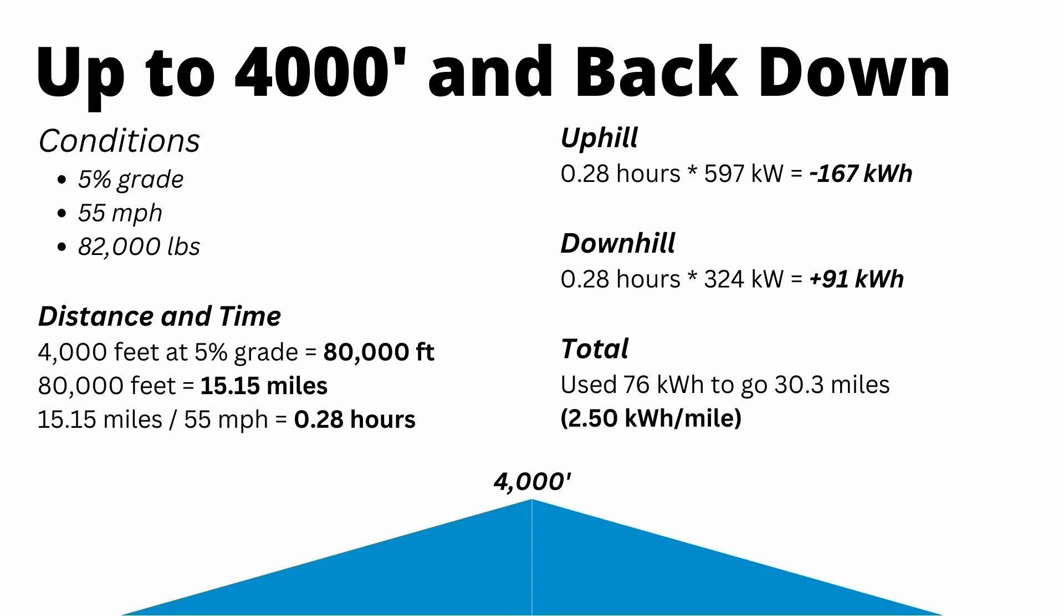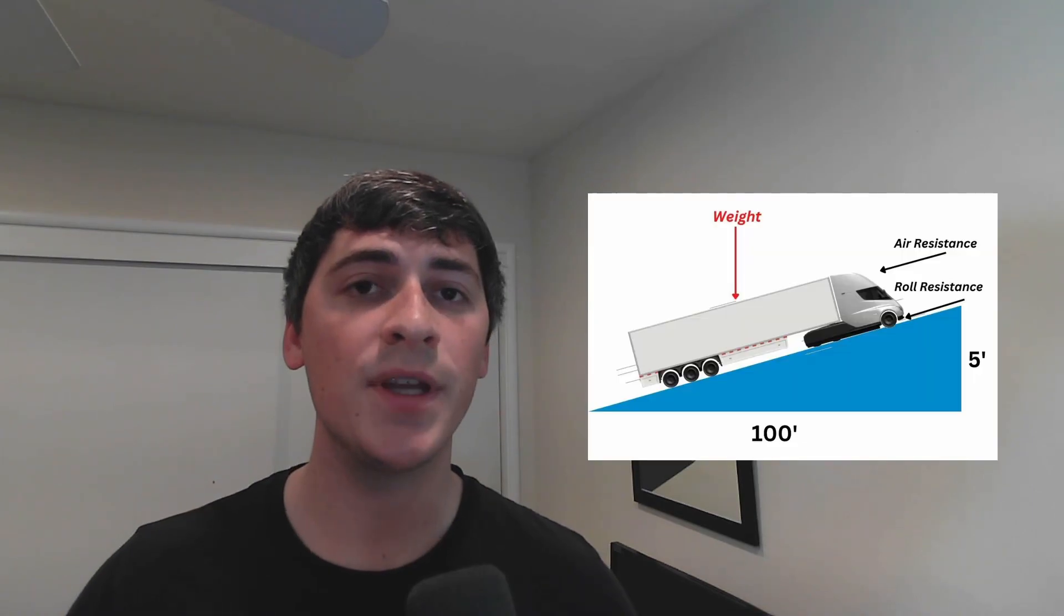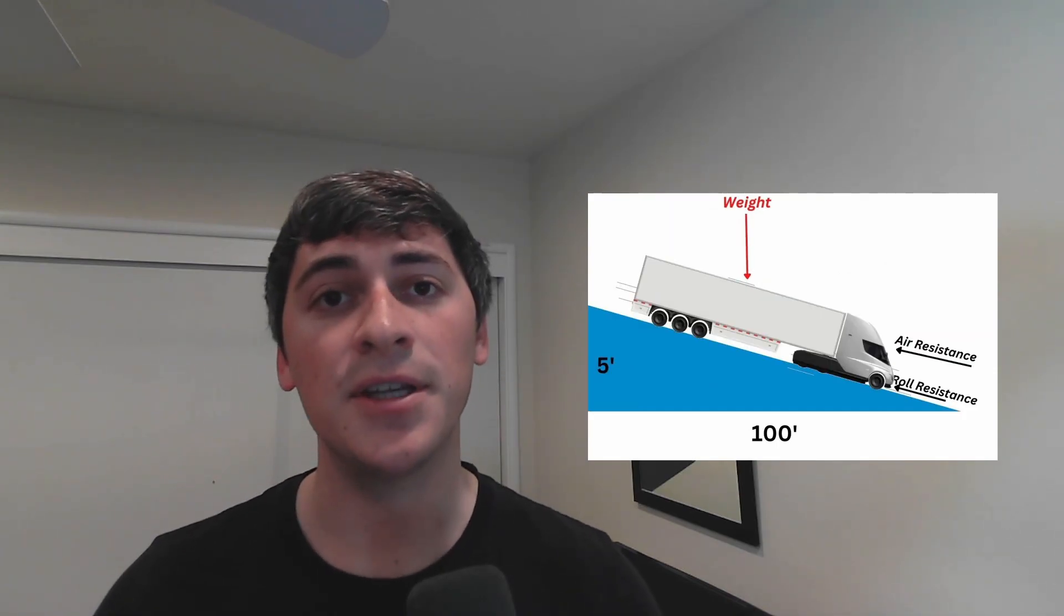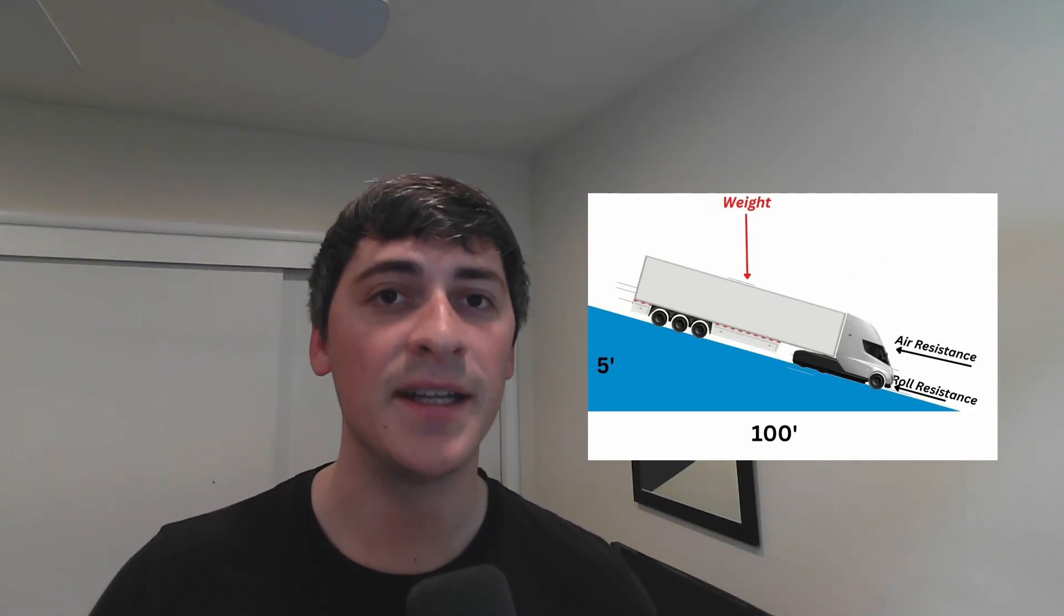And this is a great way to understand why regen isn't 100% efficient. Because when you're going up the hill, those forces from rolling resistance and air resistance are acting to slow you down. And when you're going down the hill, those same forces are acting against you. So even if the EV was 100% efficient, which it's not, it would be impossible to recover all of the energy you gained going up the hill.